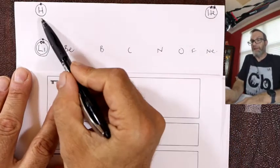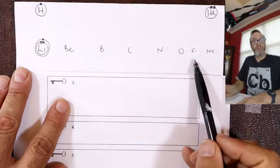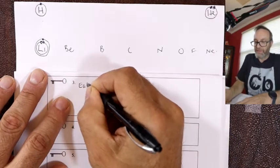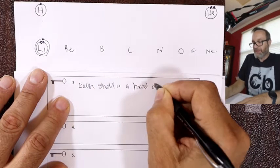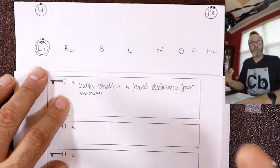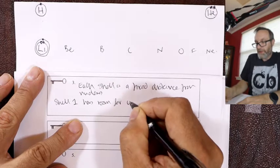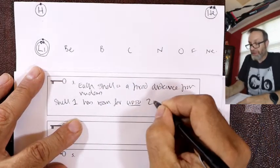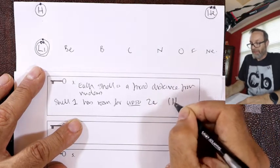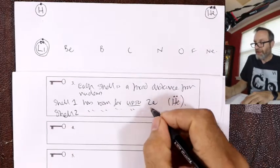In layer one there are two electrons, two elements — room for two electrons in the first layer. Layer two, row two — there are eight elements across, and we'll fill out the layers to get eight by the time we reach neon. Key fact number three: each shell is a fixed distance from the nucleus. The further out you go, just like Wrigley Field, the more room there is to park. Shell one has room for up to two electrons, which is why there are two elements in the first row. Helium is at maximum occupancy.